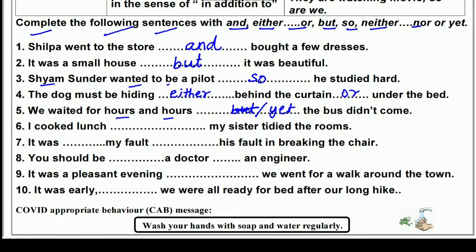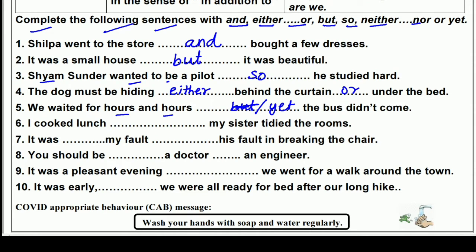'I cooked lunch __ my sister tidied the rooms.' We can join these with 'and' — I cooked lunch and my sister tidied the rooms. That means I cooked lunch and my sister cleaned the room.